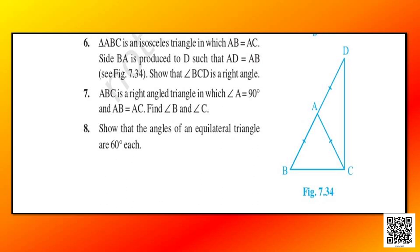Let us discuss question number 7. ABC is a right angle triangle in which angle A is equal to 90 degrees and AB is equal to AC. We need to find angles B and C. Let me draw the diagram first, then we will discuss the solution.